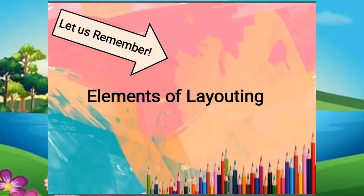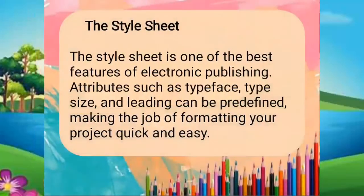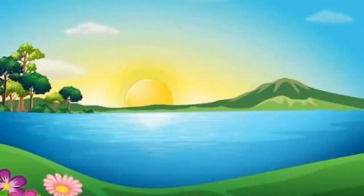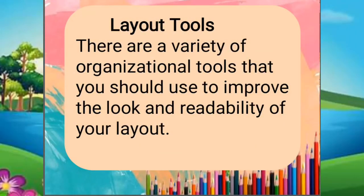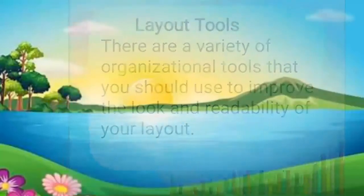Now let's come to the elements of layout. Number one is the style sheet. The style sheet is one of the best features of electronic publishing — attributes such as typeface, type size, and leading can be predefined, making the job of formatting your project quick and easy. The second element is organizing information: photographs, pull quotes, decks, and headlines should be organized. And the last element is layout tools — there are a variety of organizational tools you should use to improve the look and readability of your layout.